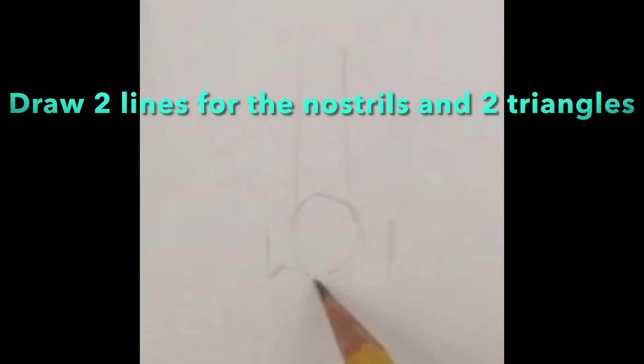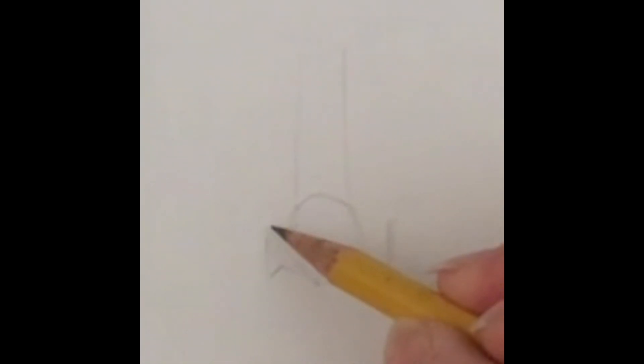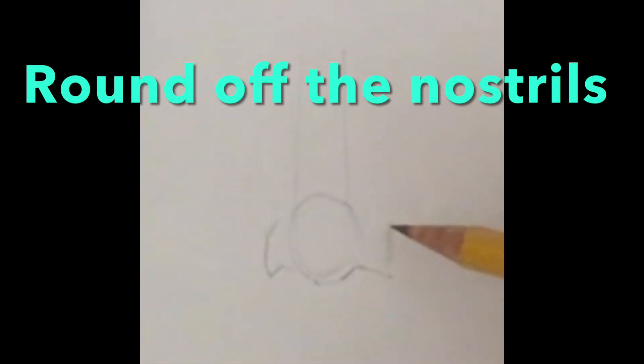Those two lines here, and then connect and try to make this more of a triangle or a diamond and not a circle. Round this off right here for the nostrils and then erase as needed.